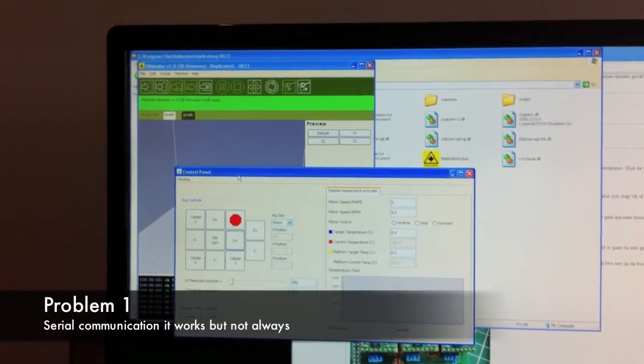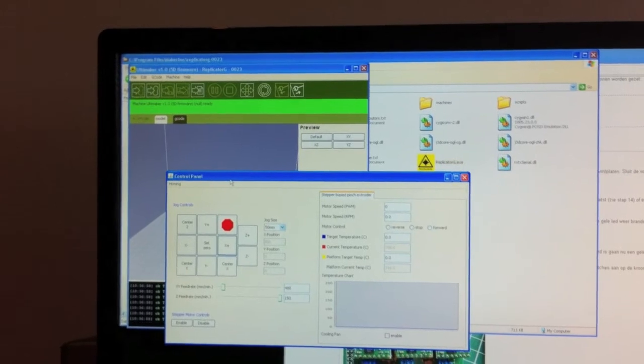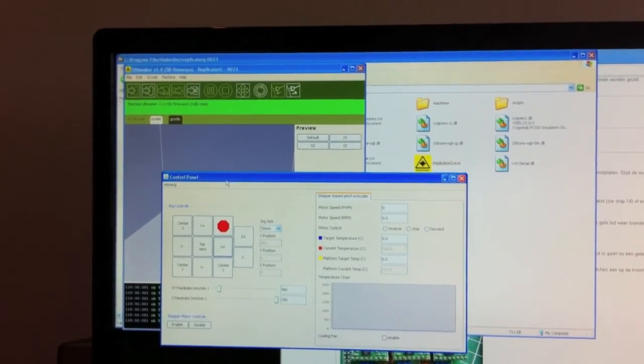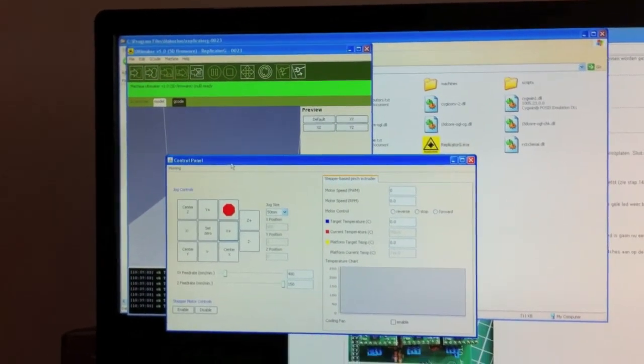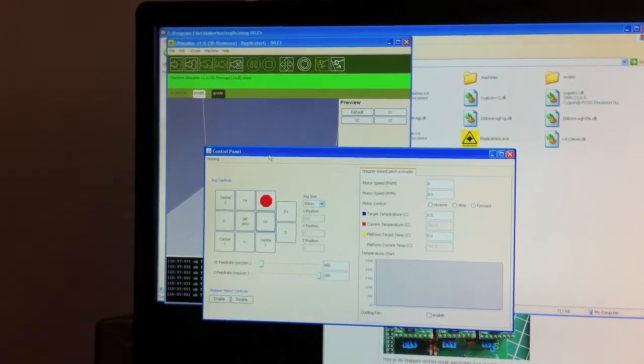Okay, I'm using Replicator G version 23. I'm having some problems with the serial communication. That's probably due to my very old machine.